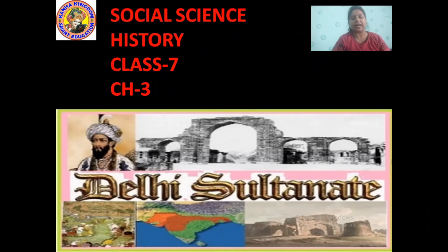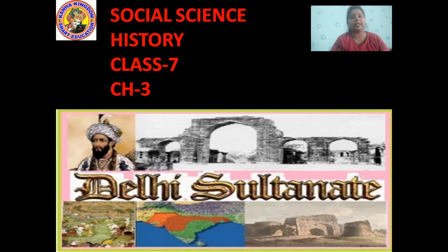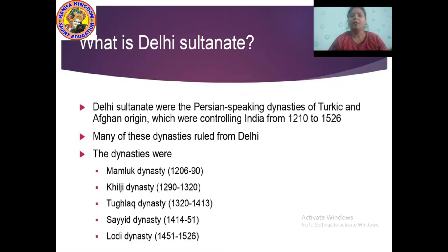Welcome to the class of social science for history, class 7, chapter 3. The name of the chapter is Delhi Sultanate.